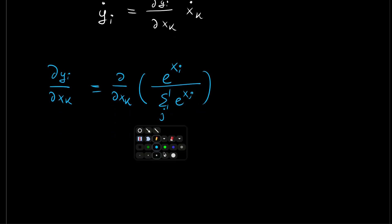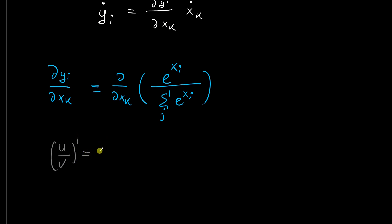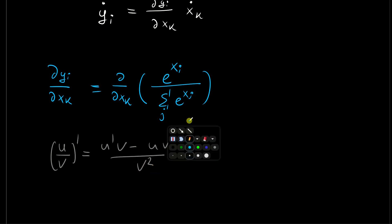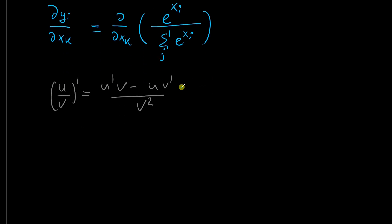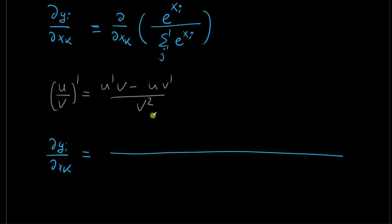We apply the quotient rule to take the derivative with respect to x_k of e raised to x_i divided by the sum over all j of e raised to x_j. The quotient rule states that (u/v)' = (u'v − u v') / v². The denominator v² is the square of the normalization: the sum over all j of e raised to x_j, all in brackets squared.